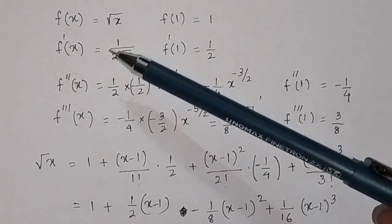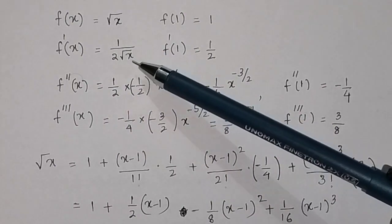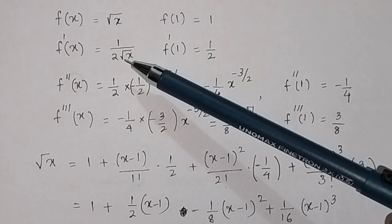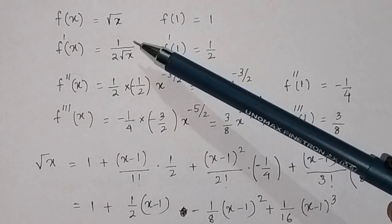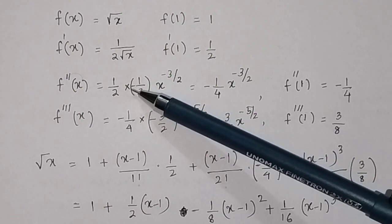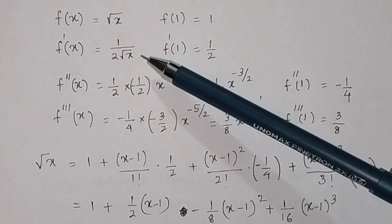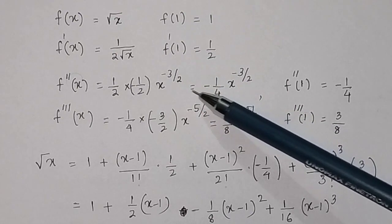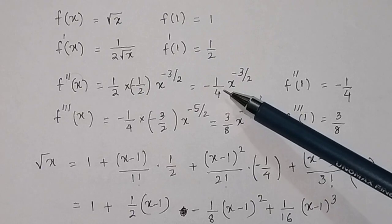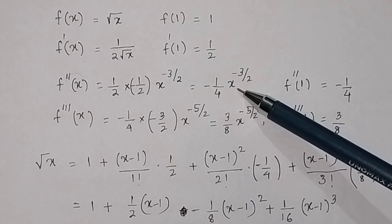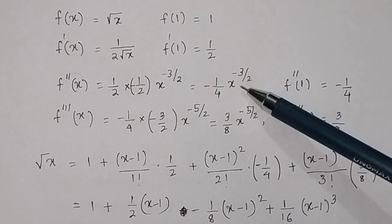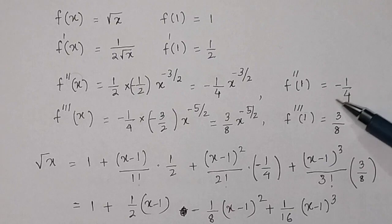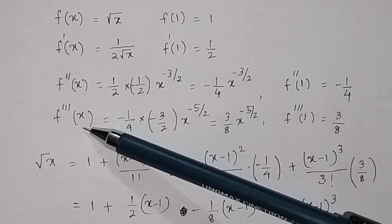For the second derivative, we differentiate 1/(2√x) = (1/2)x^(−1/2). Taking the derivative gives (1/2) × (−1/2) × x^(−1/2 − 1) = −(1/4)x^(−3/2). Substituting x = 1, f''(1) = −1/4.